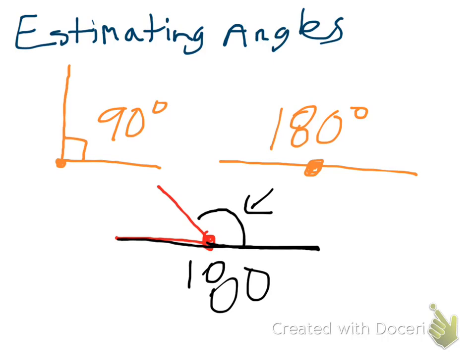I know it's going to be larger than 90 degrees. I am trying to think about how much more than 90 degrees. So if that's my 90 degree line, I'm thinking that looks like it kind of split almost in half. So I'm thinking about 180 plus 45 degrees. And that is going to give me about 225 degrees total.